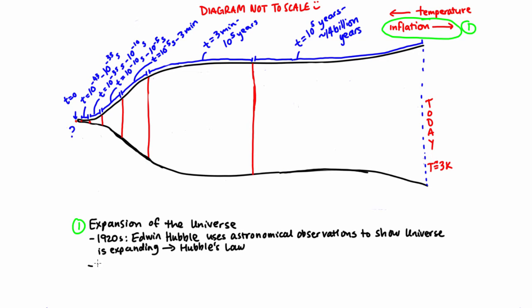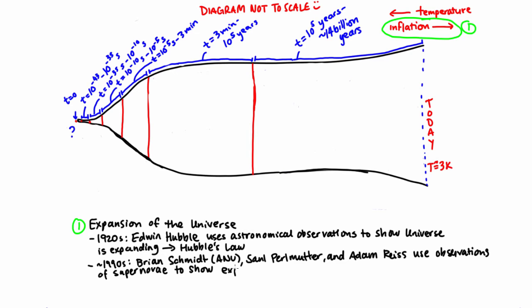More recently, Brian Schmidt, Saul Perlmutter, and Adam Rice won the Nobel Prize in Physics for work using observations of supernovae, massive explosions of stars that mark the end of their lives, showing that the expansion of the universe is accelerating.